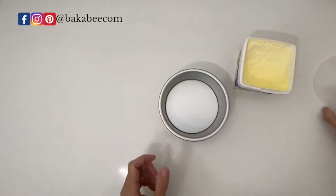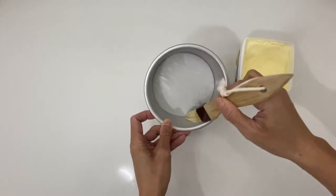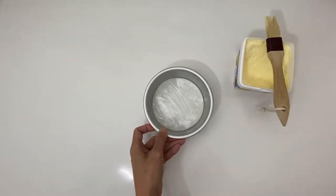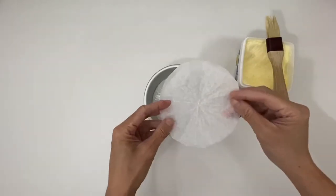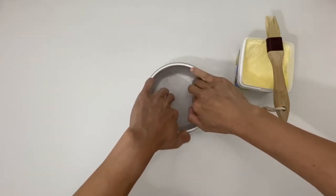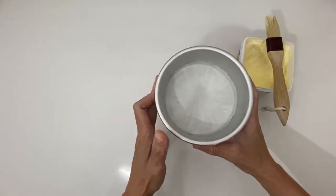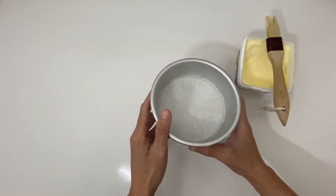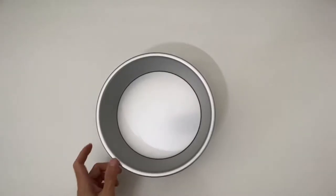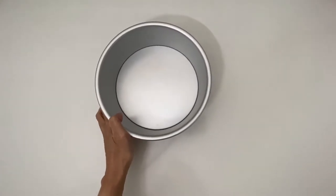Next, you need to grease the tin with butter using a brush. Or you can use cooking spray as well. Whatever you have on hand. Finally, place your perfect circle parchment paper into the tin and press it right to the edge. This folding method is suitable for any sizes of round baking tins. Give it a try if you need to line round baking tins next time.